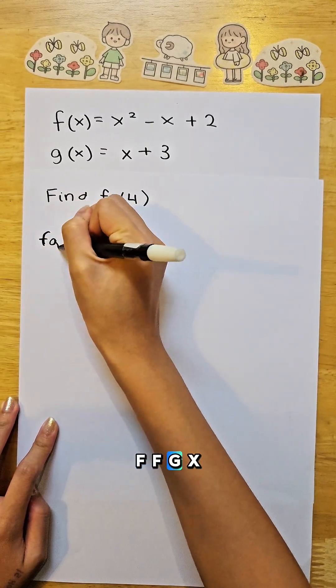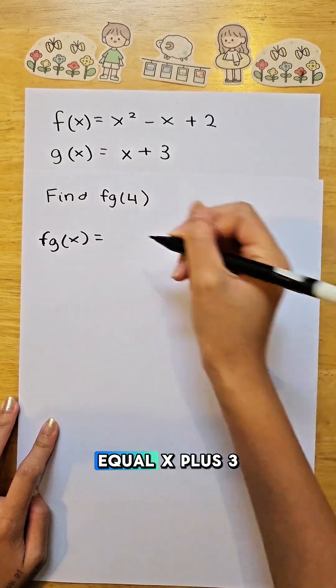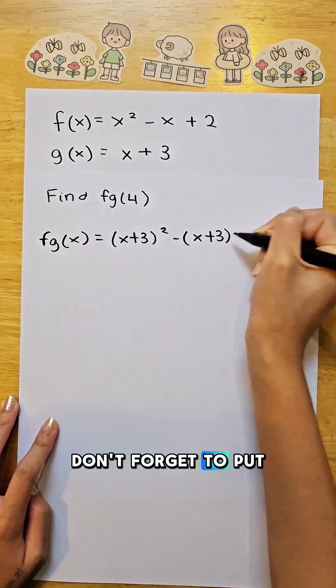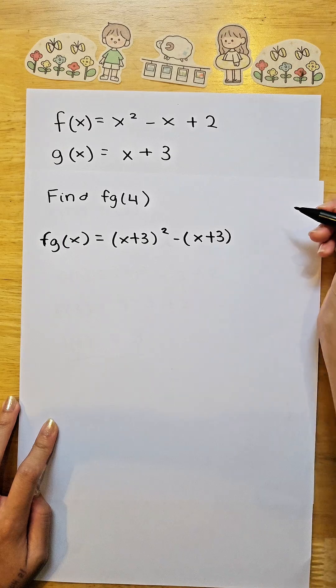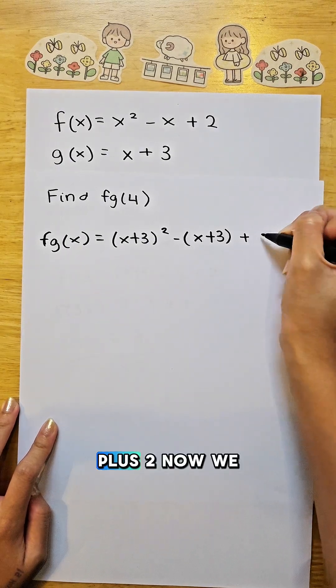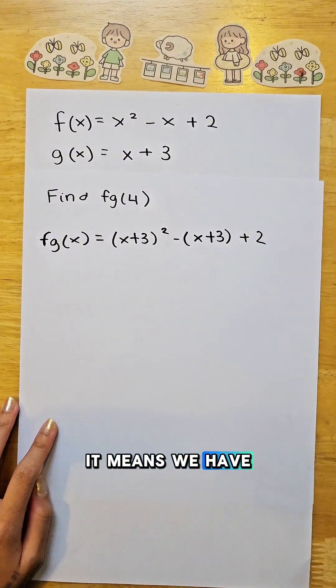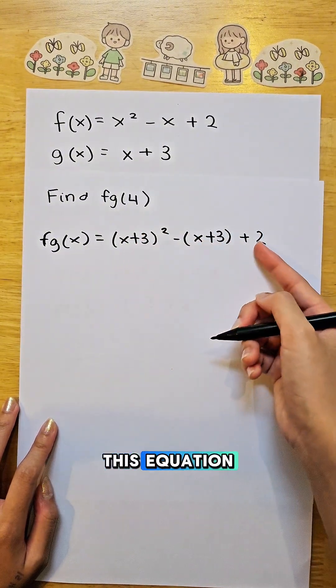f of x equals x plus 3 squared minus bracket x plus 3. Don't forget to put bracket plus 2. Now, we also have here 4. It means we have to replace all the x in this equation with 4.